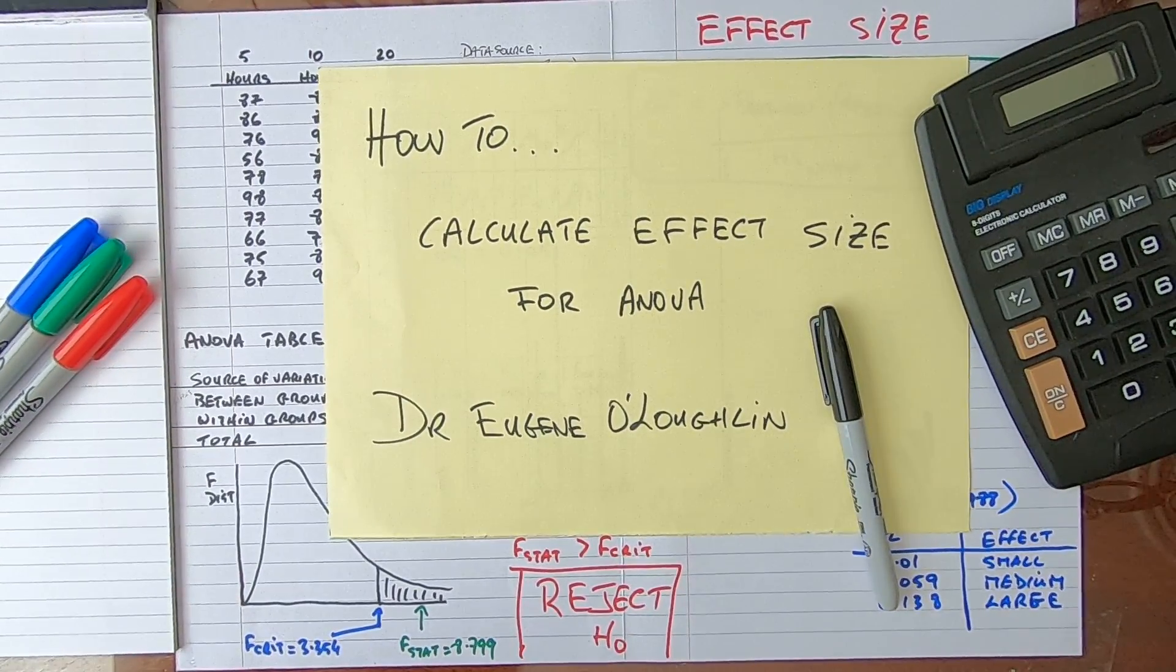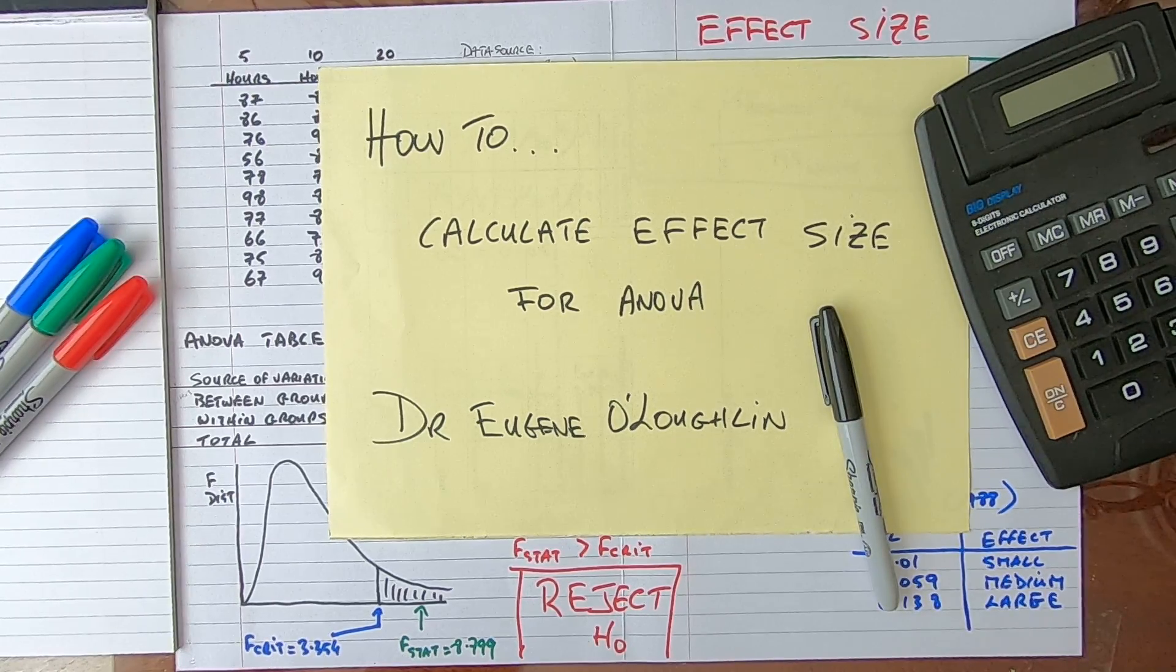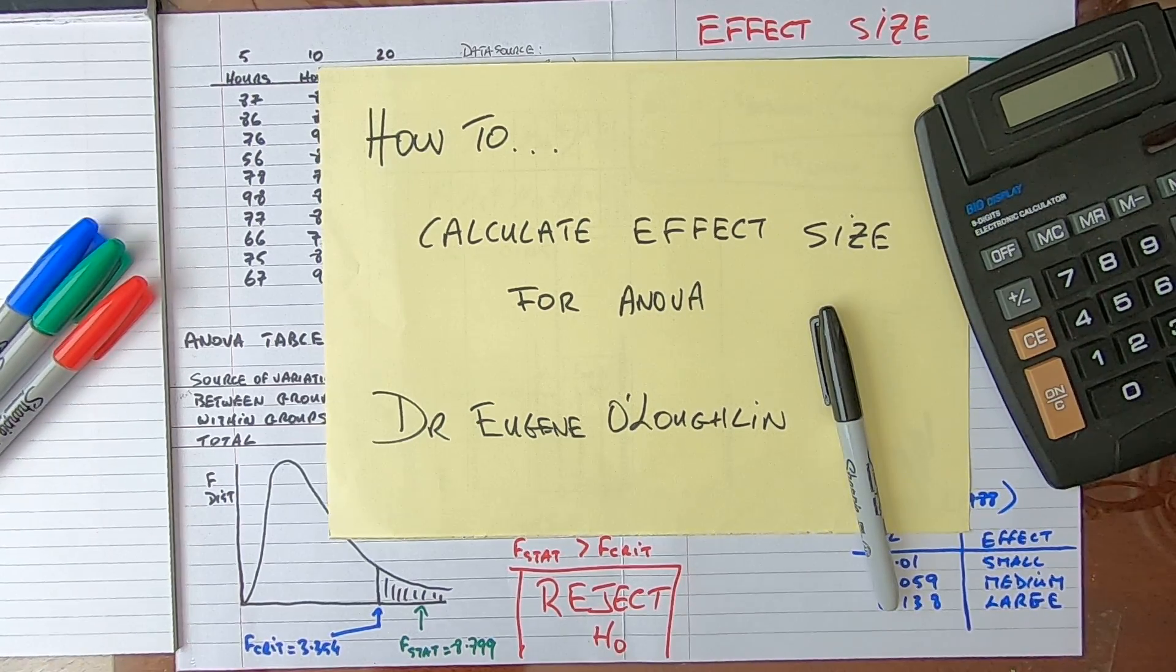Hi everybody, this is Eugene O'Loughlin and welcome to my series of short how-to videos. In this video we're going to learn how to calculate effect size for an ANOVA test, an analysis of variance, and we're going to learn how to do this by hand.